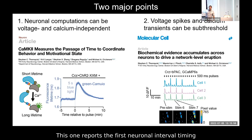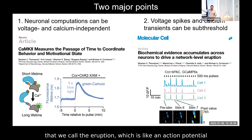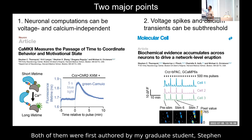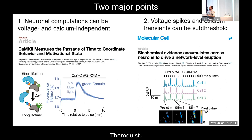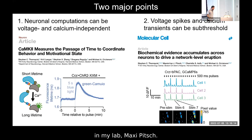I'm going to make these two points using two recent papers from my lab: one reporting the first neuronal interval timing mechanism, and one reporting a circuit mechanism we call the eruption — like an action potential for neural networks. Both were first-authored by my graduate student Stephen Thornquist.